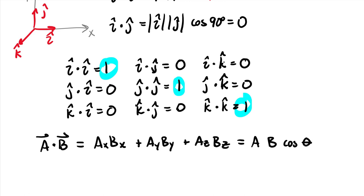These three forms give different useful tools. If you need to solve for angle theta, you find the components of both vectors, compute the component-form dot product, find the magnitudes, and back-solve for theta using cosine. Hopefully this provides a good concise introduction to dot products, and I hope you're having a great day.